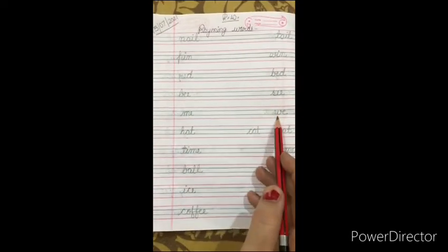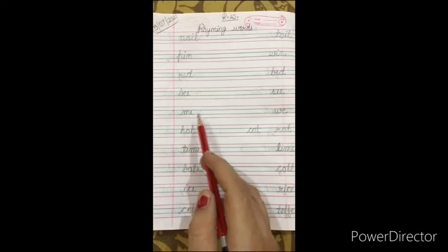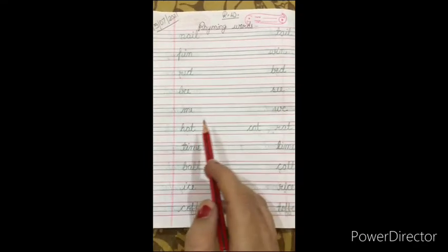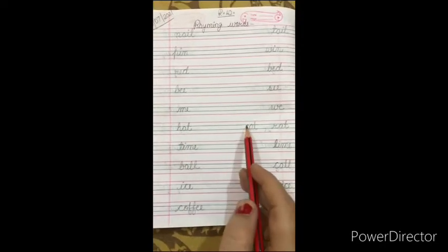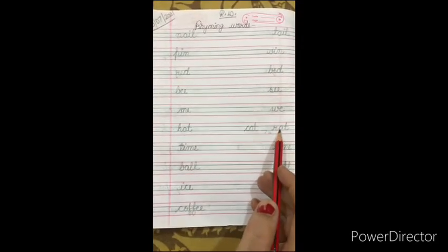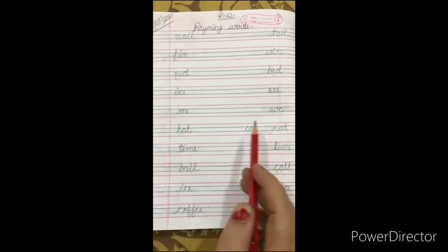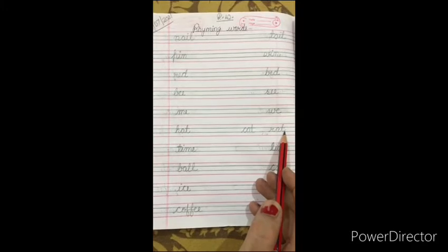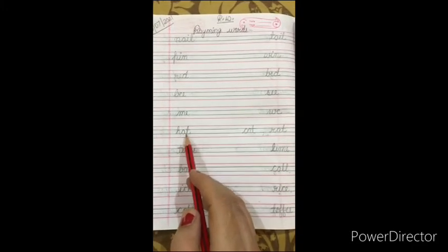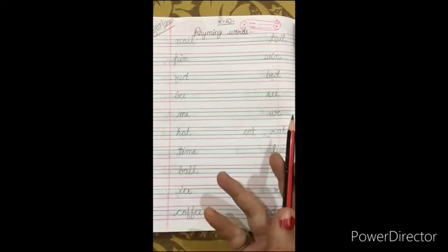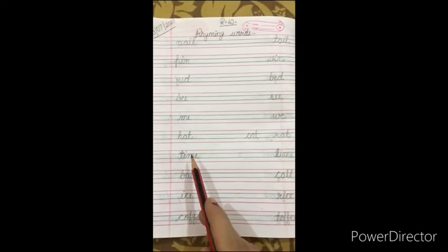Next, H-A-T, hat. Hat ka rhyming word konsa hai? Cat. Hat, cat. Hat, rat. Or kaunsa word hoga hat ka? Fat. We can also write F-A-T, fat. Hat, cat. Hat, rat. Hat, fat. Now come to next.